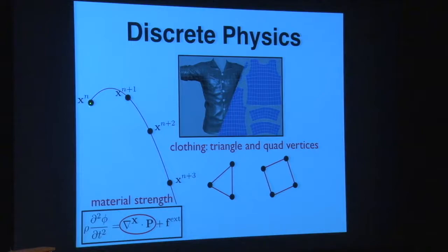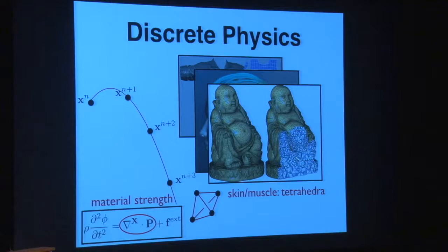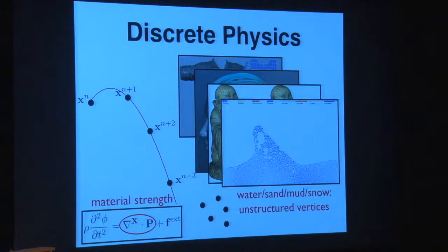We end up getting a coupled system of algebraic equations telling us how to move these vertices around. It's not always as easy as the baseball — each point needs to know about neighboring points. For a shirt we use the physics of an elastic membrane; for hair it's similarly a physics of an elastic curve, penalizing change in length. Each hair is a bunch of particles connected by segments. For things like skin we need the interior of the material too. Unstructured particles are also very useful for water, sand, mud, and snow.